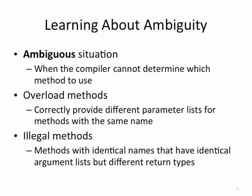The return type is not part of the overloading. With overloading, the compiler will look at the method name and the parameter list. It will not look at the return type of the method. We call that the method signature. The method signature is the method name and the parameter list — it does not include the return type. So return type cannot help you avoid ambiguity.